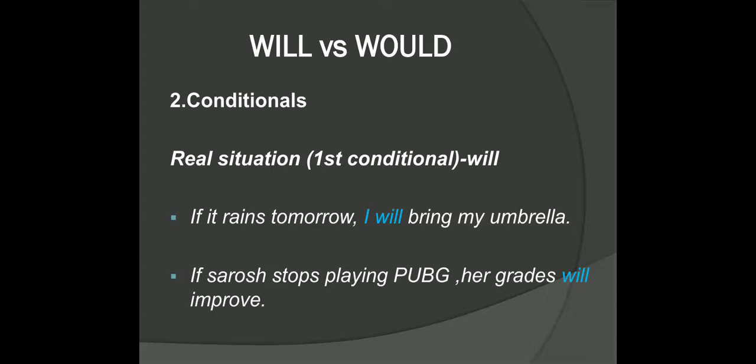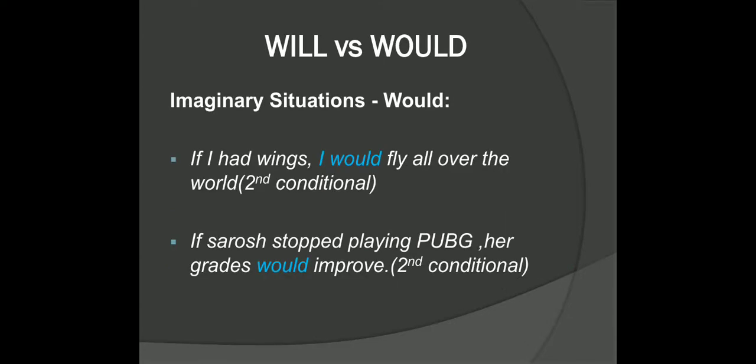When we talk about imaginary or unreal situations, we use would. For example: 'If I had wings, I would fly all over the world.' Obviously that is not possible — I cannot grow wings, so I am using my imagination. Another example: 'If Sarosh stopped playing PUBG, her grades would improve.' With would, it shows that I don't think this is actually possible. Remember: will is used for possible situations, but would is for imaginary ones. This type of sentence is called the second conditional.